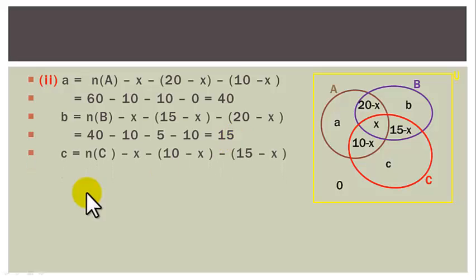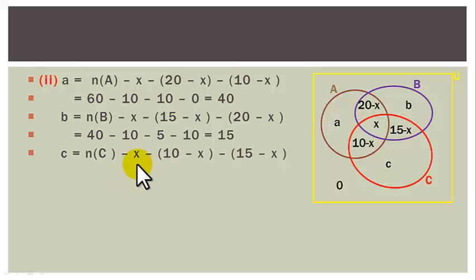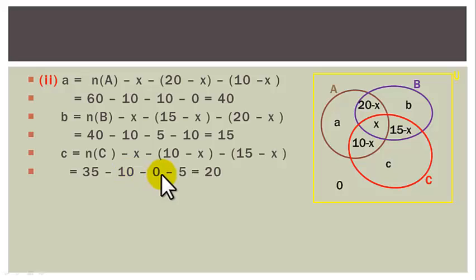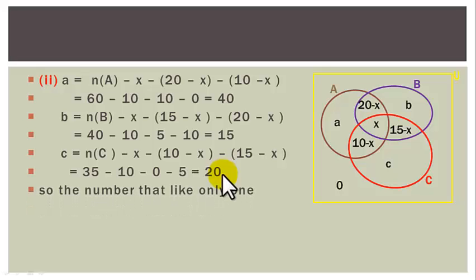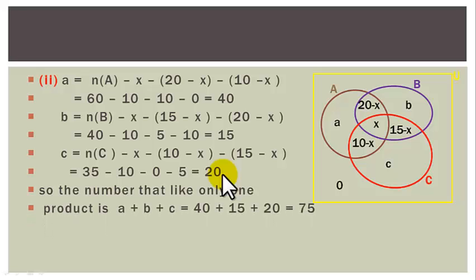Small c = |C| − x − (10−x) − (15−x) = 35 − 10 − 0 − 5 = 20. Therefore, the number that like only one product is a+b+c = 40+15+20 = 75.